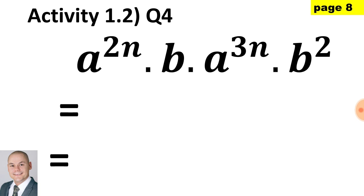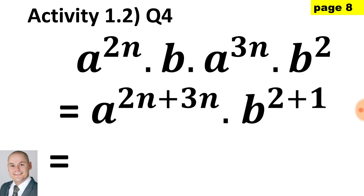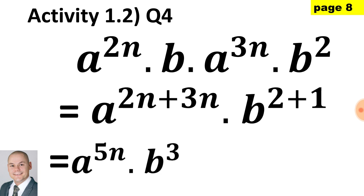In question 4, to simplify this we would multiply the bases that are the same and add the exponents — so a multiplied by a and b multiplied by b. We would have a to the exponent of 2n plus 3n, multiplied by b to the 2 plus 1, giving us a to the 5n multiplied by b to the 3.